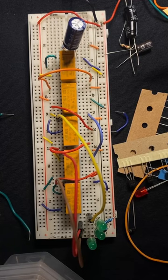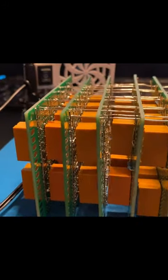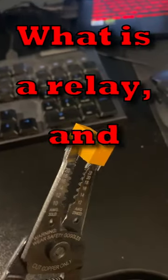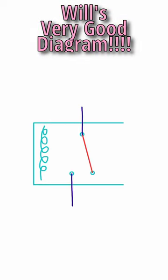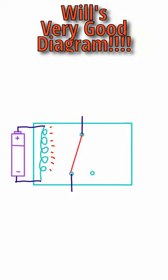So while we let Will figure that out, let's talk about what actually runs the computer. What is a relay and how does it work? A basic relay consists of a small electromagnet, which is like a magnet that you can turn on and off, and a switch. When the electromagnet is powered, it switches the switch.